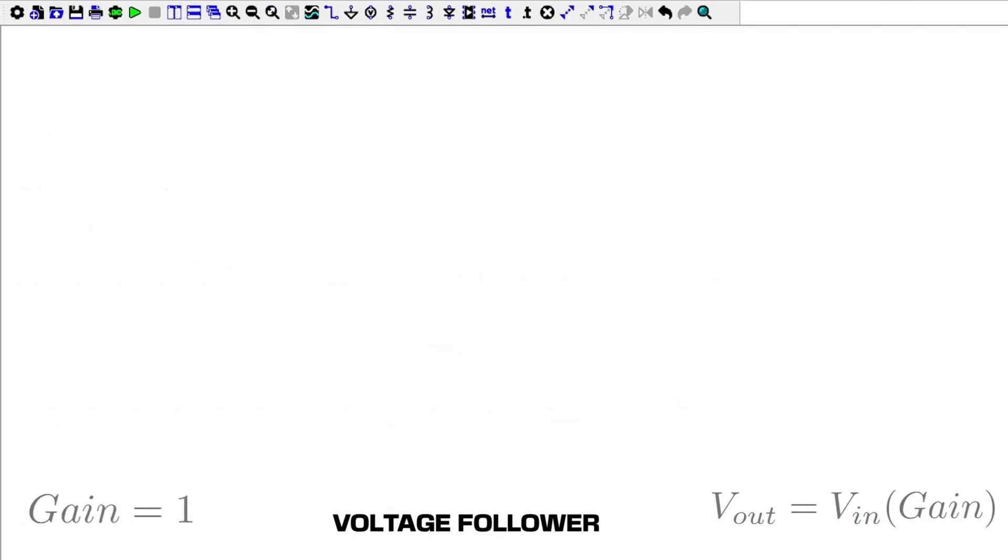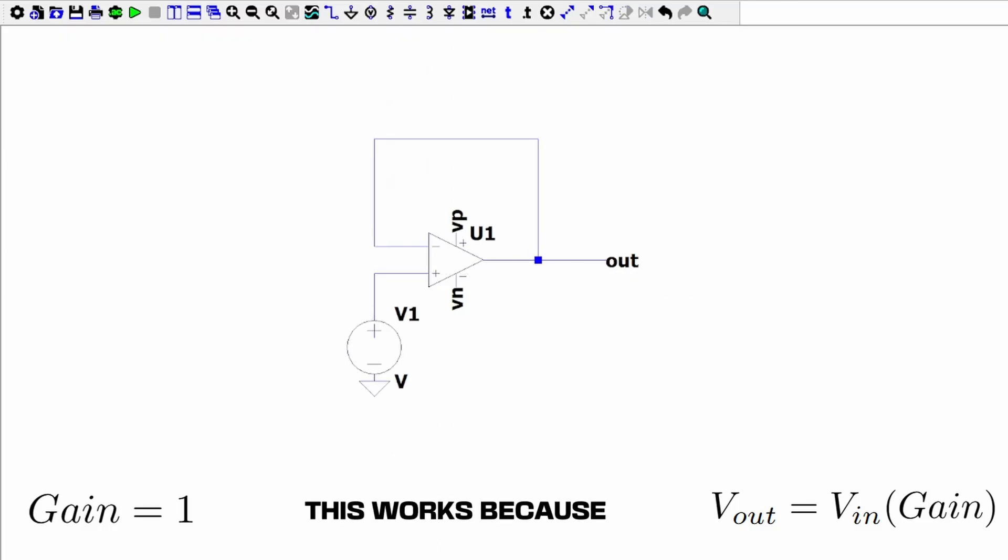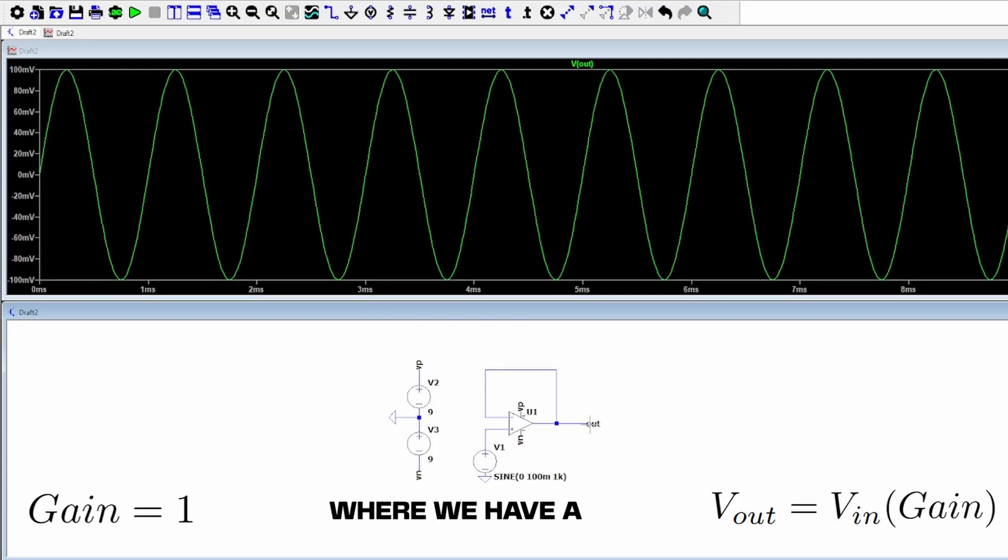We first have a voltage follower. A voltage follower, or buffer, is a simple configuration that provides a gain of 1. We use this to connect a high impedance source to a low impedance load without affecting the signal. This works because the output is connected directly to the inverting input. This feedback loop forces the op-amp to adjust its output so that the voltages at the two inputs are virtually equal. This is the core principle of negative feedback, where we have a wire from the output to our inverting terminal.